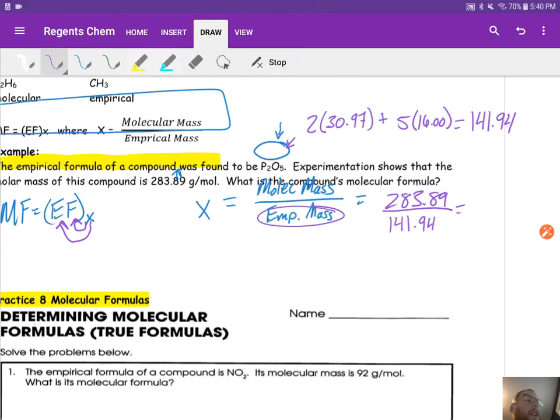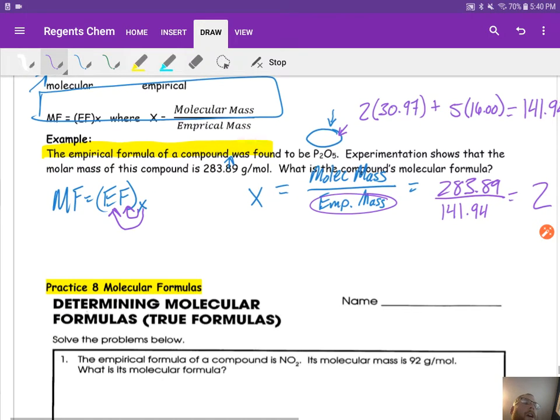When we do that math, you should end up with 2. So now that we've found X, we can calculate our molecular formula. So our empirical formula is P2O5. Our X value is 2. So I'm going to just distribute in 2 to all my other subscripts. So my molecular formula is going to be P4O10.